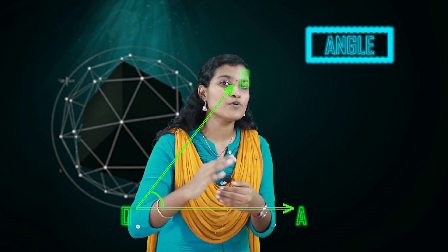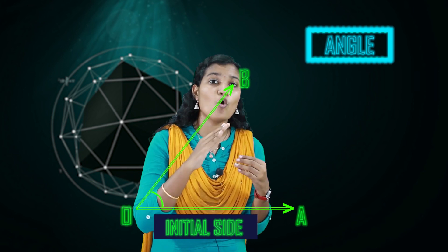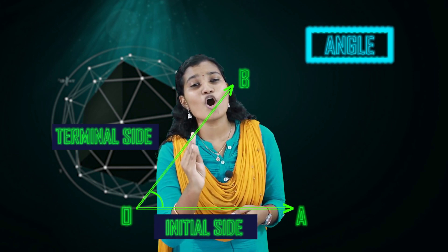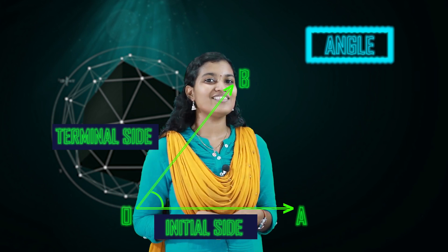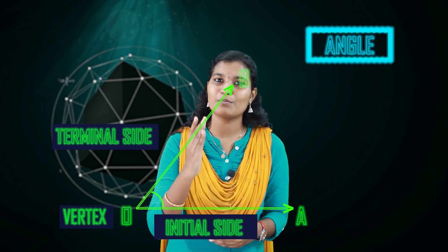Here you can see a ray OA which is rotated to OB. OA is the initial side and OB is the terminal side. The rotation happens about a fixed point O, which is called the vertex. So an angle is defined by its initial side, terminal side, and vertex.